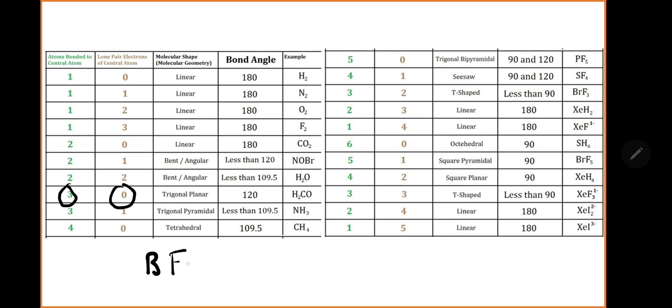Boron trifluoride will have a shape of trigonal or trigonal planar. Planar because it's a 2D, it's a flat structure and a bond angle of 120 degrees.